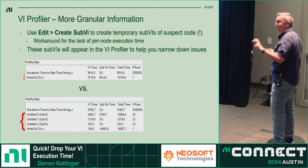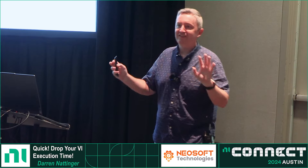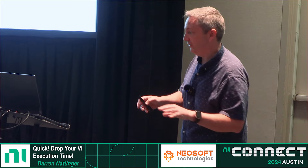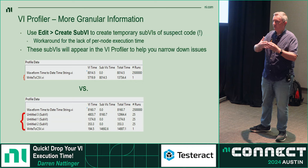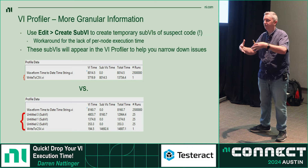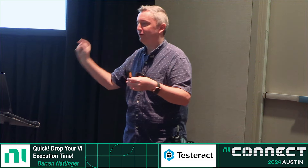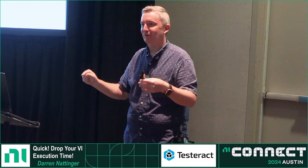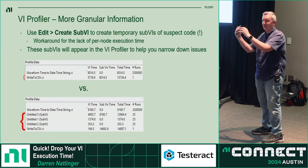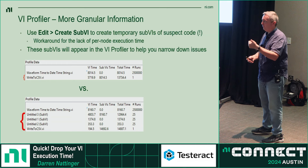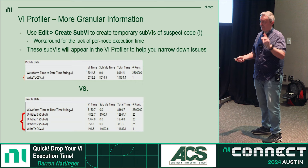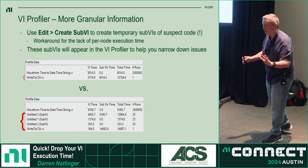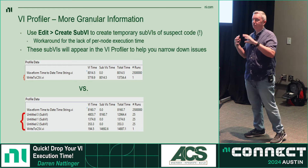Here's the first exclamation mark: a silly trick for when the profiler tells you a VI takes a lot of time but there are no sub-VIs on its block diagram. To get more granular information, just start picking parts of the diagram and turning them into sub-VIs using Edit > Create Sub-VI. When you do that, the single slow VI splits into multiple items in the profiler so you can identify which part is slow. Then use Control-Z to undo and remove the temporary sub-VIs.